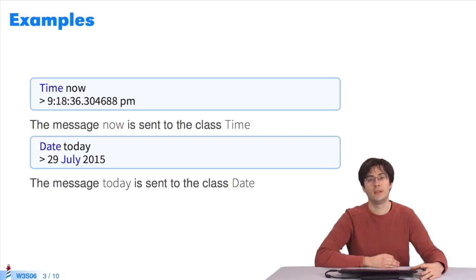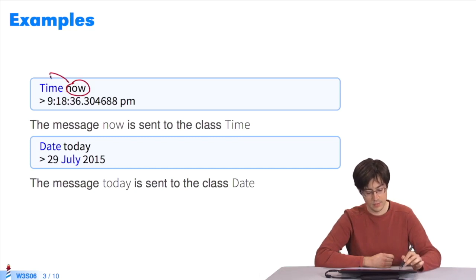I'll give you two examples. Time now. You can send the message now to the object time, which is a class, and it returns the current time. So, I send the message now to the object time, which is a class name. It sends me back the current time. Likewise, I send the message today to the object date, which is a class. It returns the date.